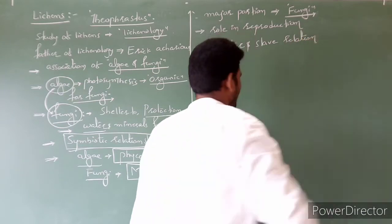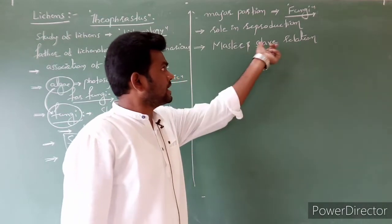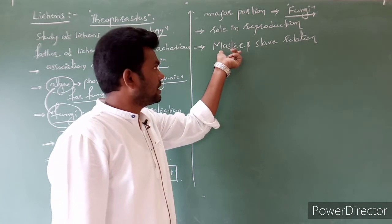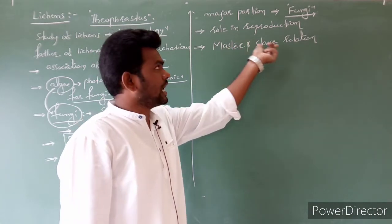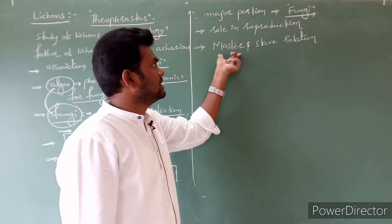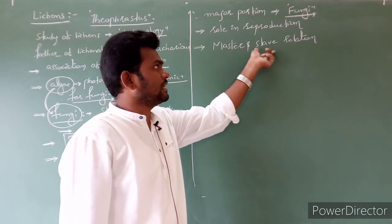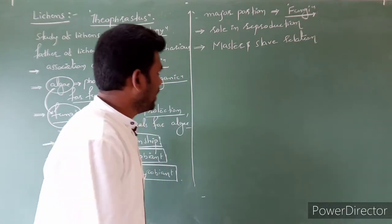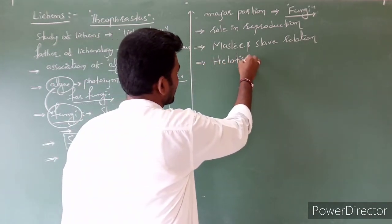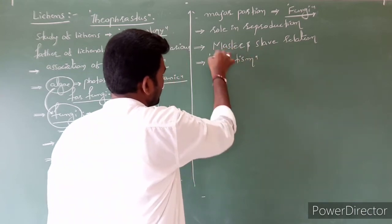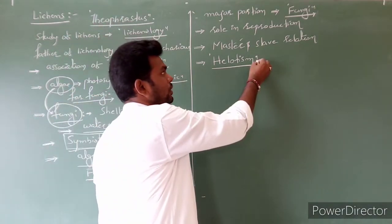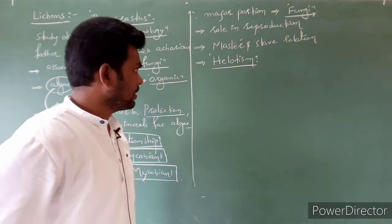In the master and slave relationship, the master is the algae and the slaves are the fungi. That is why some scientists have called it a master and slave relationship, and nowadays it is also called Helotism.